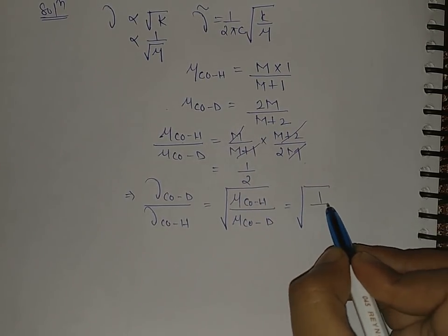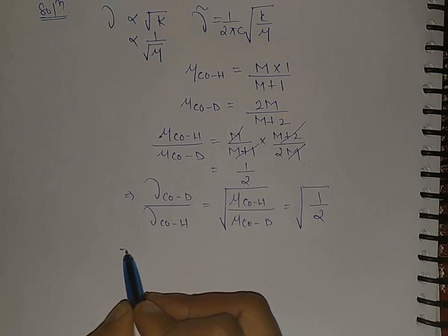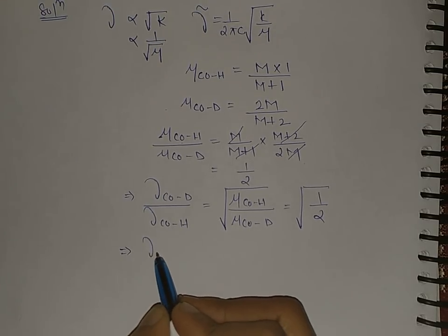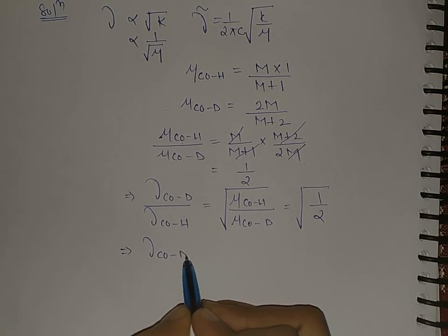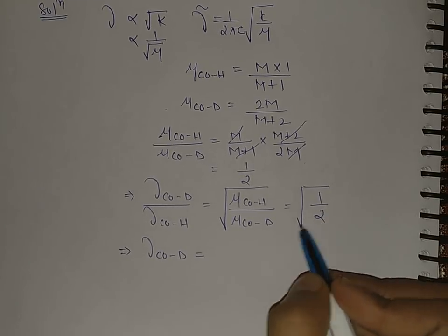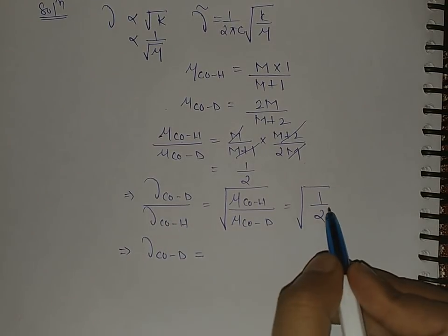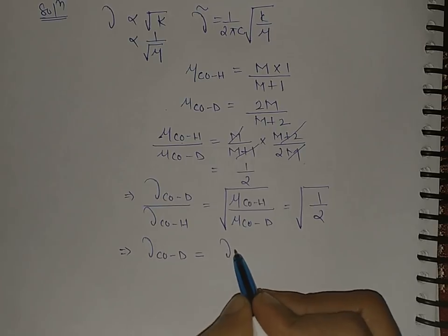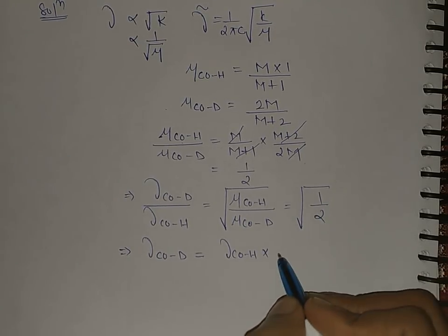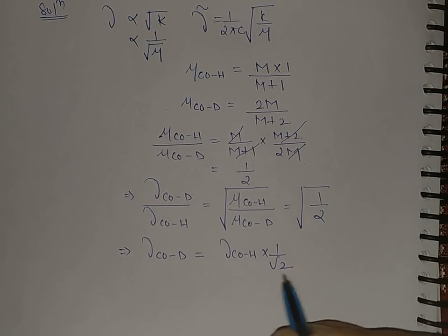Now see, and this value is how much? We have calculated this is 1 by 2, so this is root 1 by 2. So this will be cobalt deuterium equals to this, this value goes in multiplication, Co-H times this is 1 by root 2.